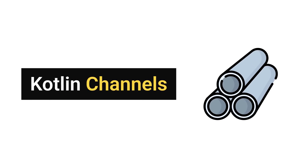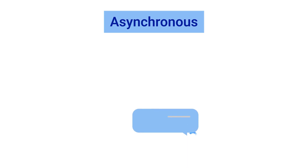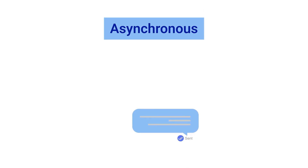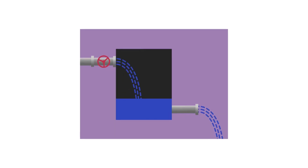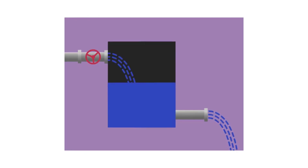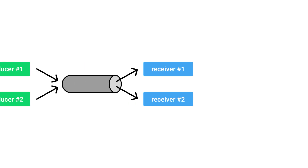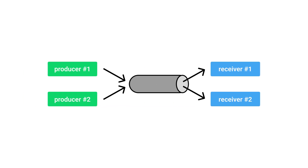In this video, I'm going to completely introduce you to Kotlin channels. Channels are used for asynchronous communication between coroutines. We could say that a channel can be represented as a pipe to which we can send and retrieve data. Channels allow us to pass a stream of values from one coroutine to another, and the elements inside the channel are processed in the same order as they arrive. One coroutine — the producer — can send some data to a channel, while the other coroutine — the receiver — can receive that data from it.